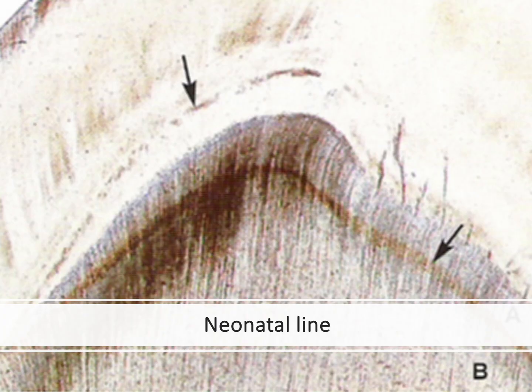One of the Anderson lines is the neonatal line. We know that a neonatal line is formed in tissue to mark the before-and-after birth transition in mineralization and composition. The neonatal line is considered a type of Anderson line. You can also call it a contour line of Owen, but it is preferable to call it a neonatal line.